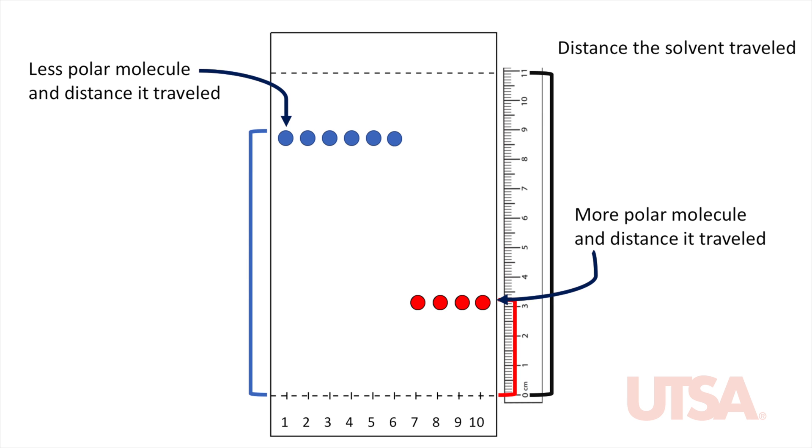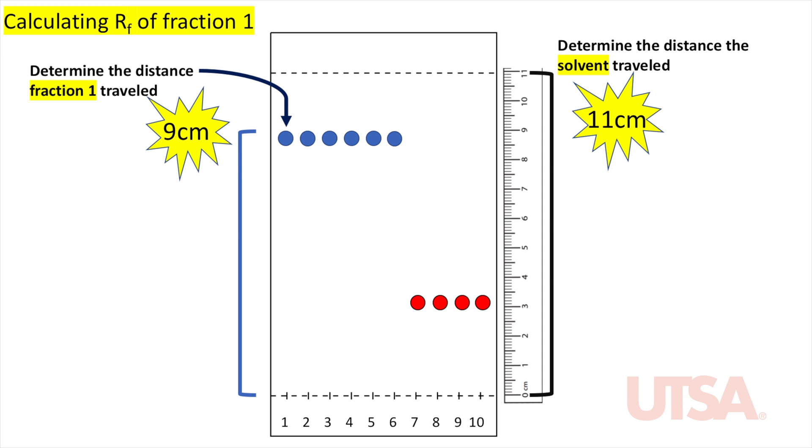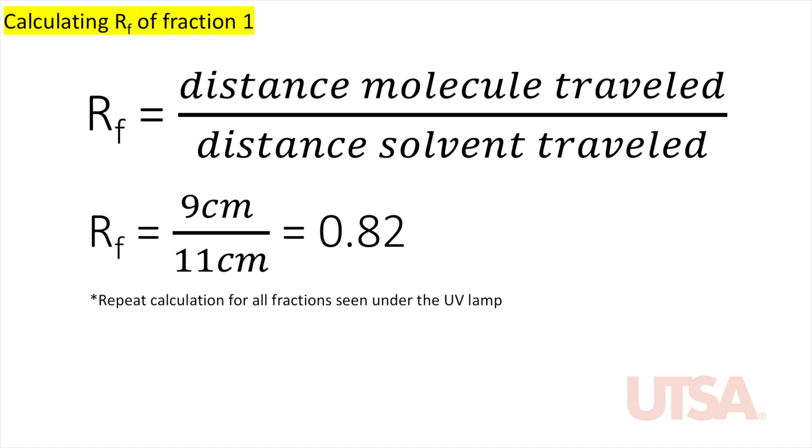Once you've spotted your fractions onto the TLC plate, move the developing chamber to the UV lamp. You will need to quickly place your plate under the lamp and circle your fraction spots. Use a ruler to measure the distance that the solvent and the fractions have traveled. For each fraction, calculate the retention factor RF using this formula. RF equals distance the molecule traveled divided by distance the solvent traveled. Repeat the calculation for all fractions seen under the UV lamp.